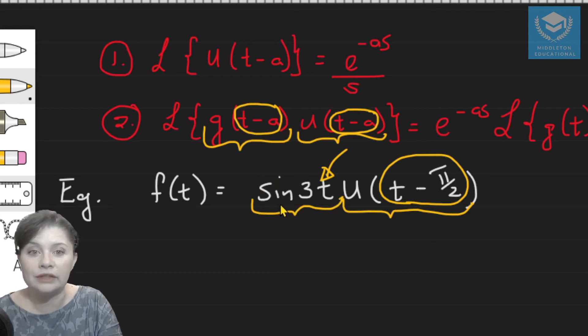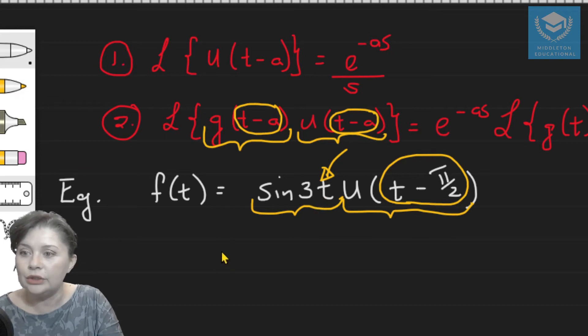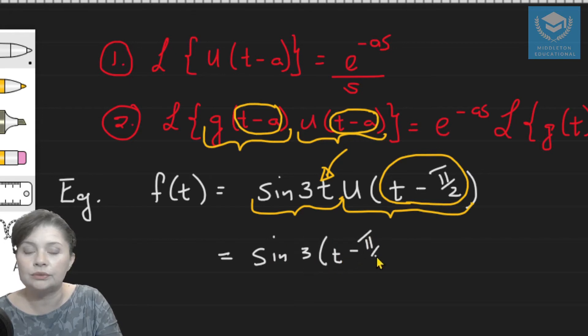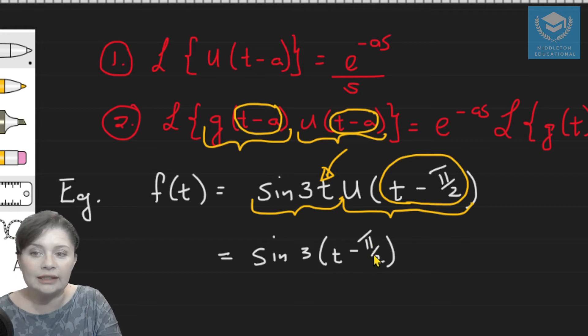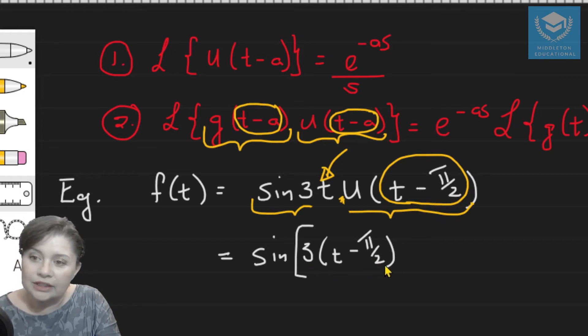So we have to first convert the sine 3t into a form that we can use. So how do we do that? We are going to have to introduce pi over 2, because then you're going to have t minus pi over 2 in your function somewhere. But if you introduce it like this and you don't do anything else, you're changing the value of that function. So in order to stop that from happening, you have to compensate for the value that you've introduced.